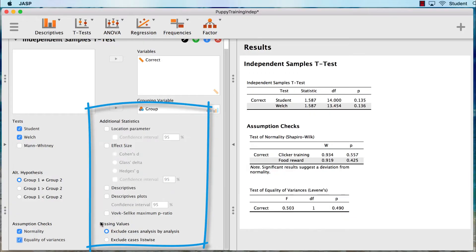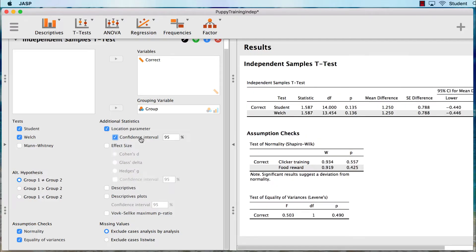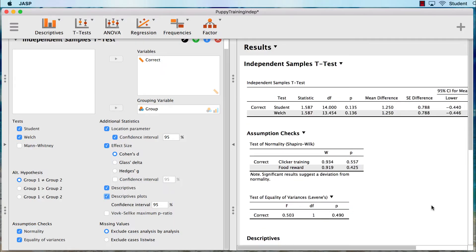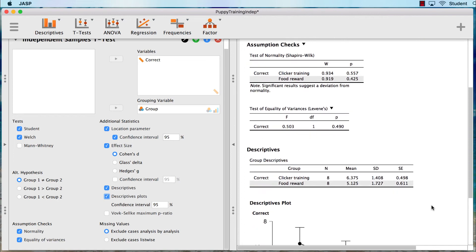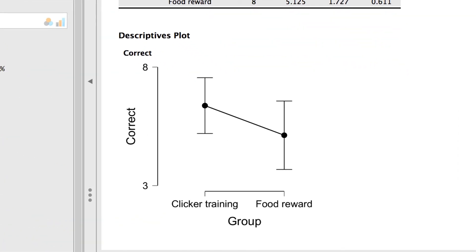Under additional statistics, I am going to get a location parameter with 95% confidence intervals. I want a Cohen's D effect size, descriptive statistics, and a descriptives plot. In the outputs pane, we can see the group statistics. I want to begin by scrolling to the bottom. I always like to see a picture of the data before I begin interpreting. I see that the food reward group mean was lower than the clicker training group, but there's a lot of overlap in those error bars. I probably would not include this plot in my write-up or in my paper, but it is a good place to begin.